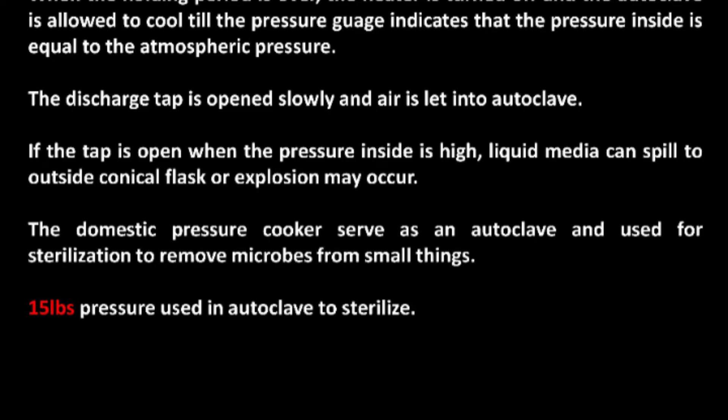When the holding period is over, the heater is turned off and the autoclave is allowed to cool until the pressure gauge indicates that the pressure inside equals atmospheric pressure. The discharge tap is opened slowly and air is let in. If the tap is opened when the pressure inside is still high, liquid media can spill out of conical flasks or an explosion may occur.